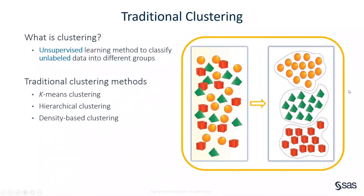Let me first briefly explain the idea of clustering. Clustering is the essential task of grouping a set of data points into several clusters based on their inherent similarities. Unlike classification, where you give a label to each data point and train the model according to the labels, there is no label information needed for clustering.